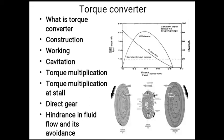When the turbine speed has increased and is nearly 85% to 90% of the impeller speed, the coupling point is reached, and the oil leaves the turbine in the forward direction, hitting the back of the stator blade. The stator blades thus cause a hindrance in the flow of fluid from the turbine to impeller.